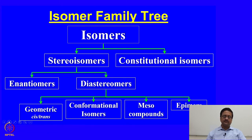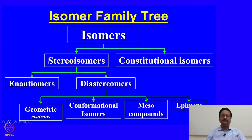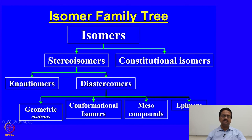Isomers are divided into two parts: stereoisomers and constitutional isomers. Stereoisomers are further subdivided into enantiomers and diastereomers, and diastereomers are further classified into four sections: geometric isomers (cis and trans isomers), conformational isomers, meso compounds, and epimers. We will slowly learn about all these different classifications of isomers through these lectures.